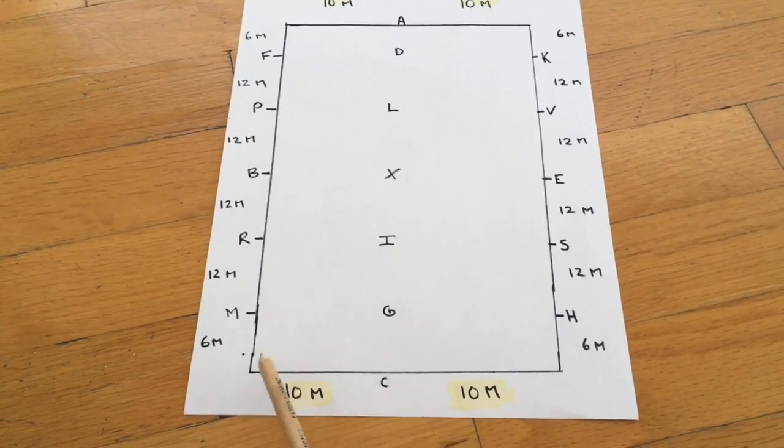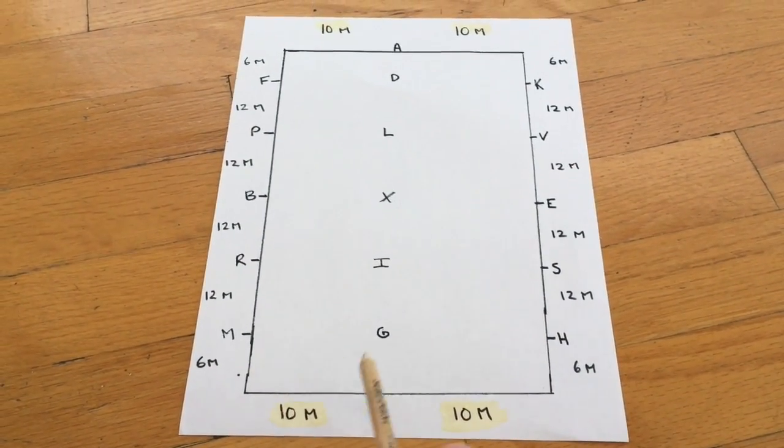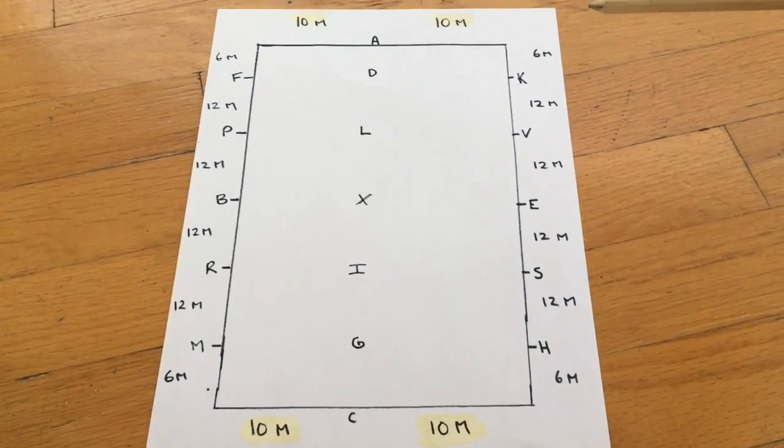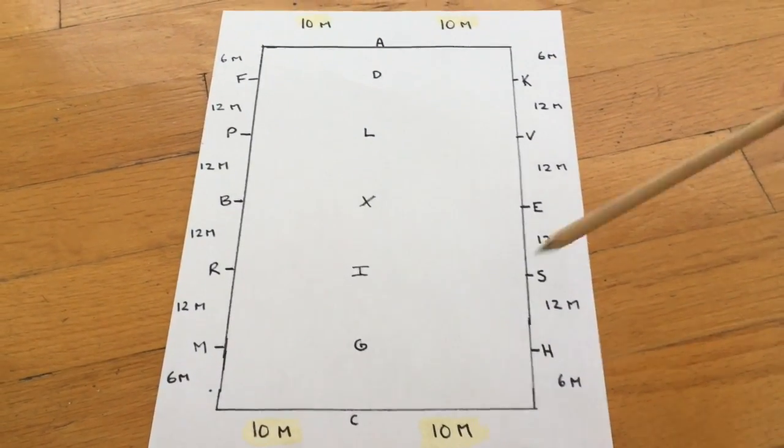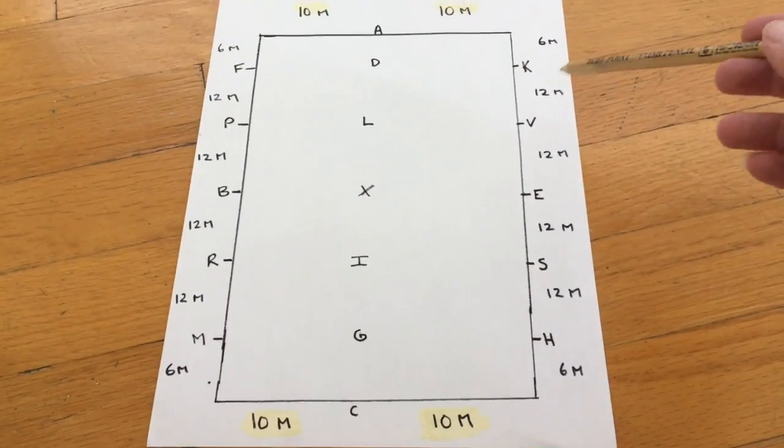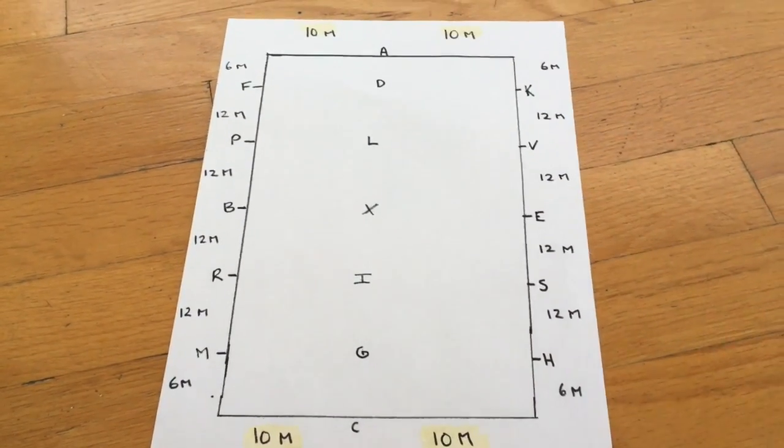This means that if it's 20 meters across both short sides, we have 10 meters on each side of A and on each side of C. Down the wall we have our other letters. All the corners to the first letter are 6 meters, whether that's to K, to H, to M, or to F. All of the letters in between are 12 meters between. So that's pretty straightforward.